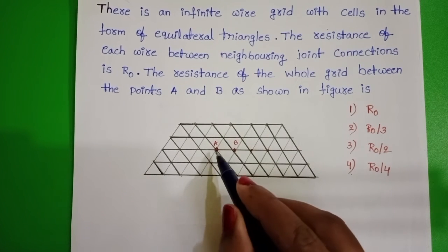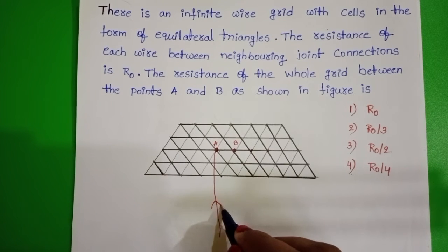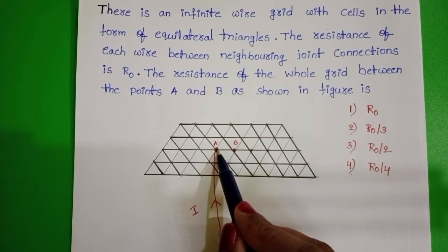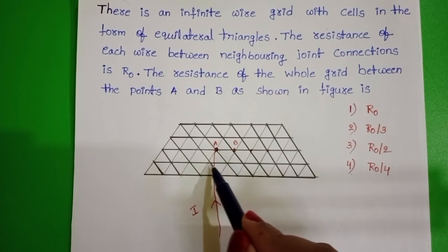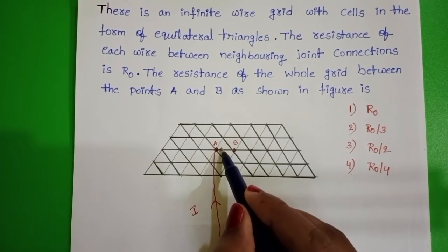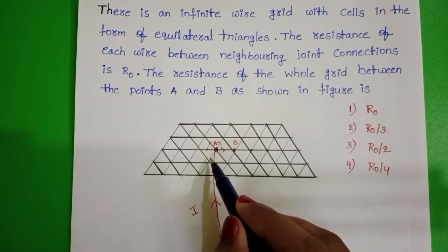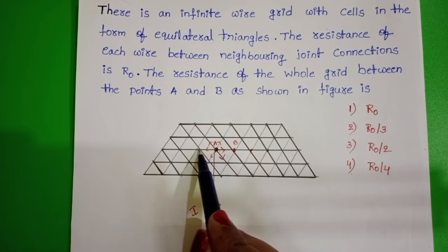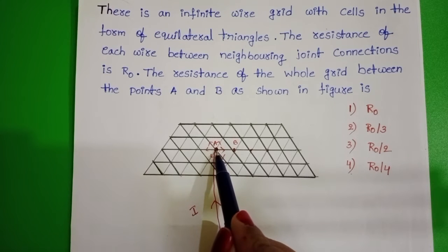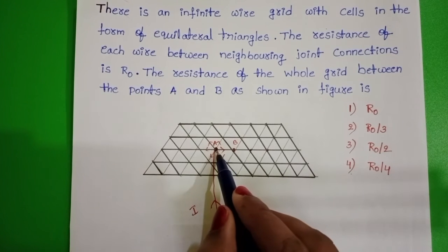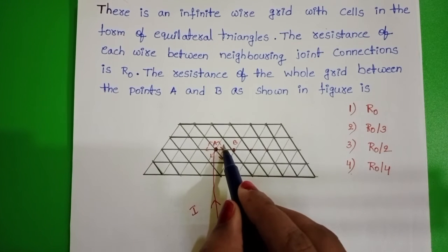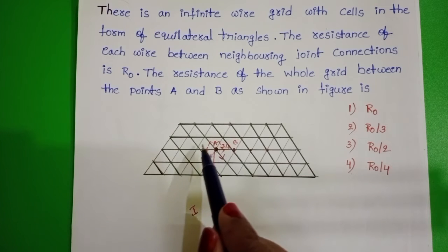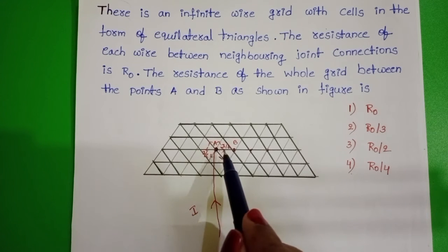Suppose a wire is connected to point A and current I is passing through it. This current enters into point A and leaves through six different paths. Since resistance is the same in all directions, current divides equally — along each direction, current is I/6. So the current passing from A toward B along that direction is I/6.